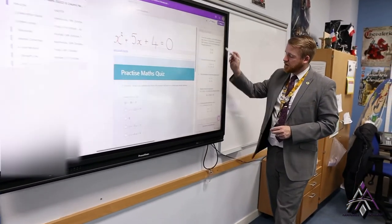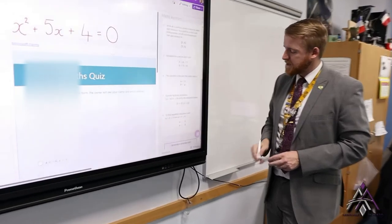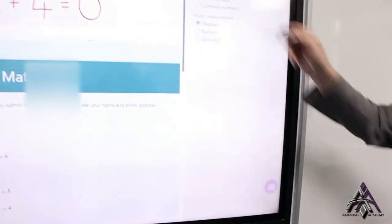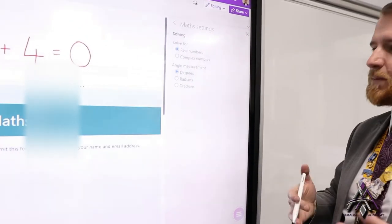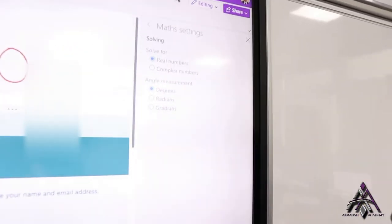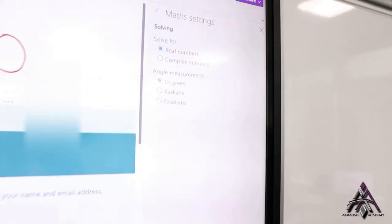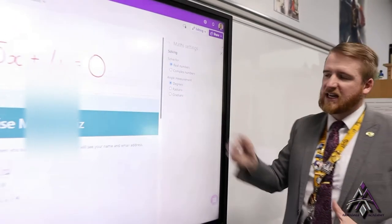A couple other things you may decide to look at. If we come back to this right hand side with the maths assistant, if we click on settings you'll see obviously we have real numbers, complex numbers depending on the area of maths you're looking at. Angle measurement, we tend to use either degrees or radians in high school maths, gradians if you need it.